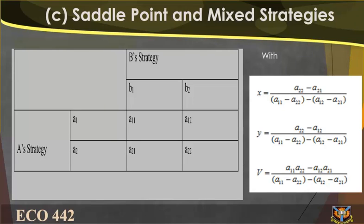With a mixed strategy, x equals a22 minus a21 over bracket (a11 plus a22) minus bracket (a12 plus a21). y equals a22 minus a12 over bracket (a11 plus a22) minus bracket (a12 plus a21). The value of the game equals (a11 times a22 minus a12 times a21) over bracket (a11 plus a22) minus bracket (a12 plus a21).